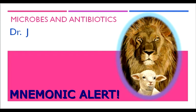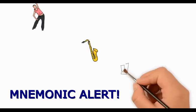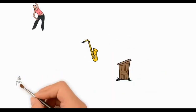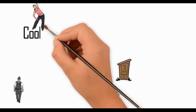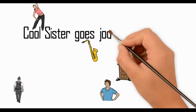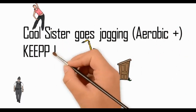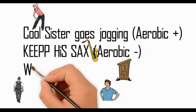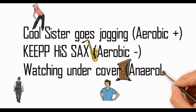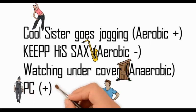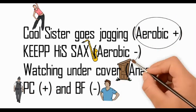To remember bacterial classification, imagine a cool sister goes jogging and she gets tempted by a golden saxophone. Keeping the sax, she is watched undercover by a police constable and her boyfriend. Staphylococcus, enterococcus, and streptococcus are aerobic gram-positive organisms.